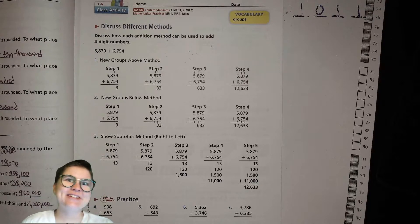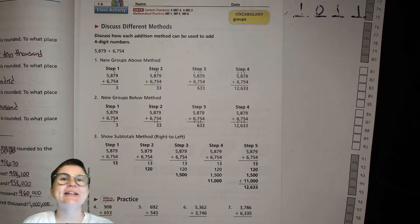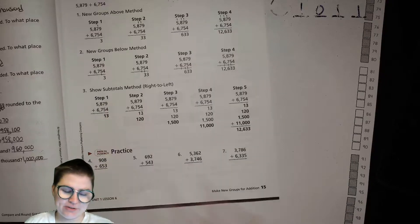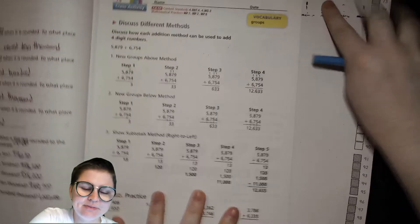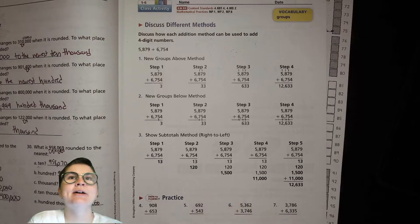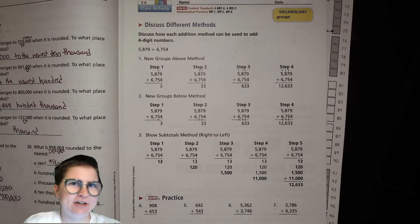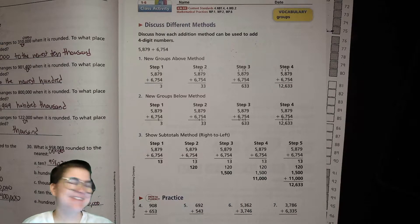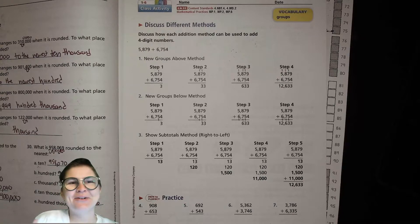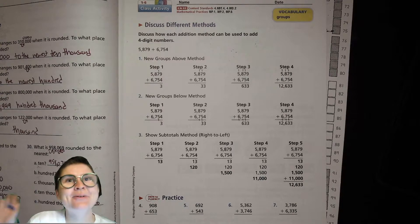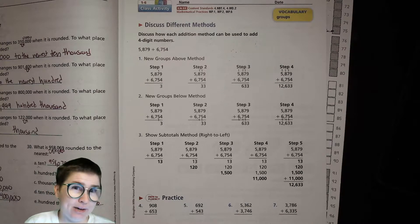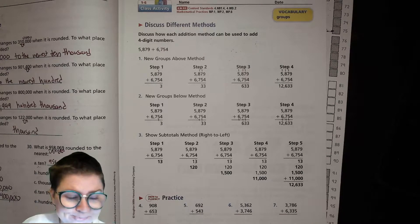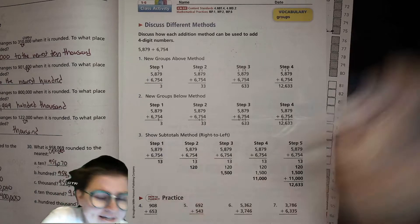Hello fourth graders, this is the video for our math unit one, lesson six. Go ahead and turn to page 15 of your book and jump in with me. I know you're in fourth grade and you've done tons of addition over the years — you're an old hat at this — but we're going to talk about using different methods for addition. It might have been a while since you've really thought about these.